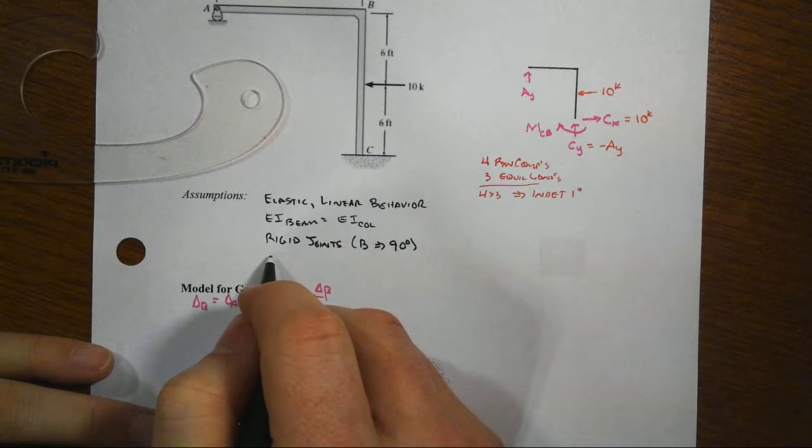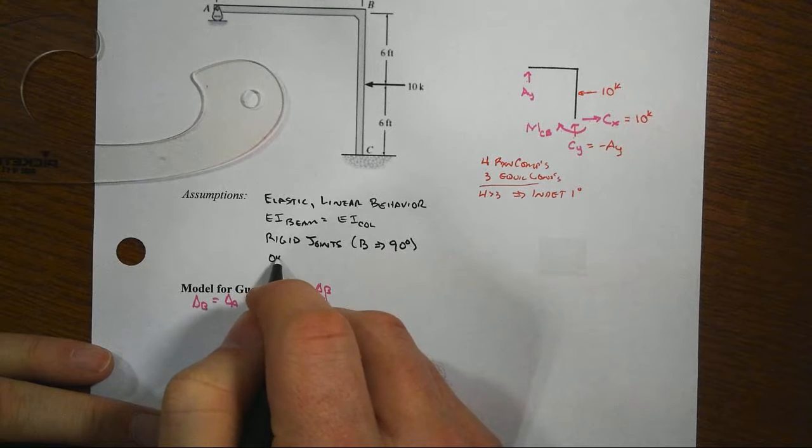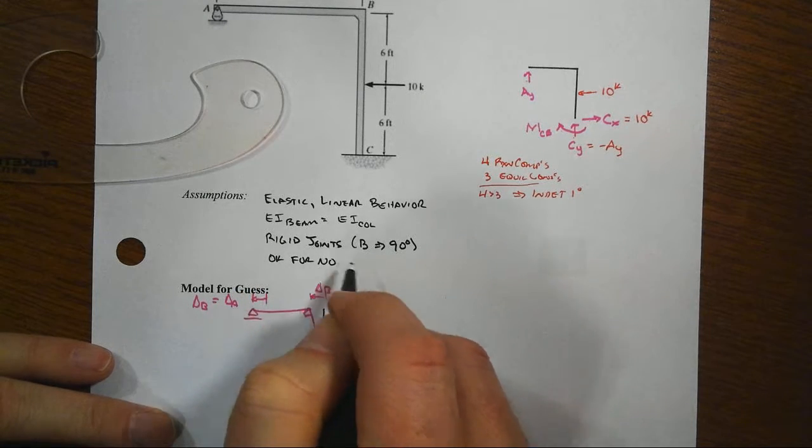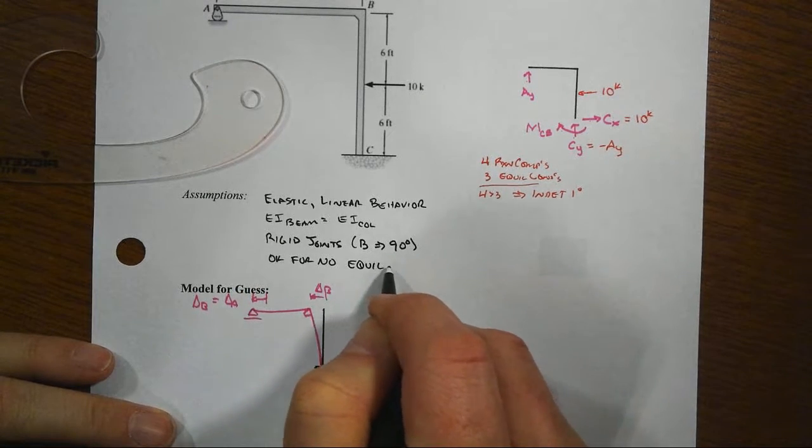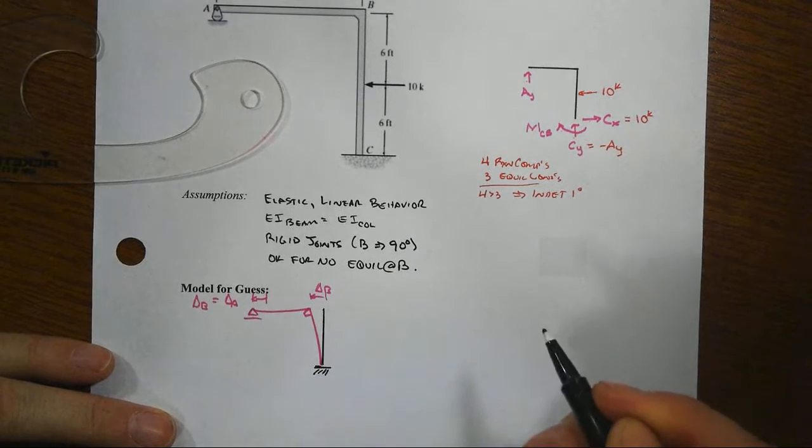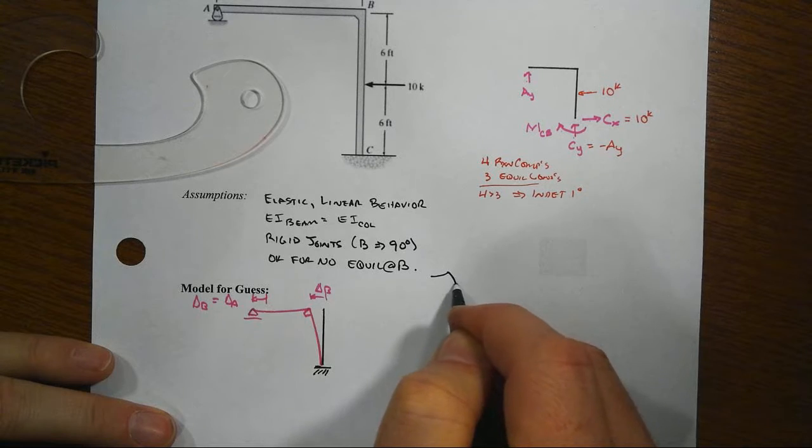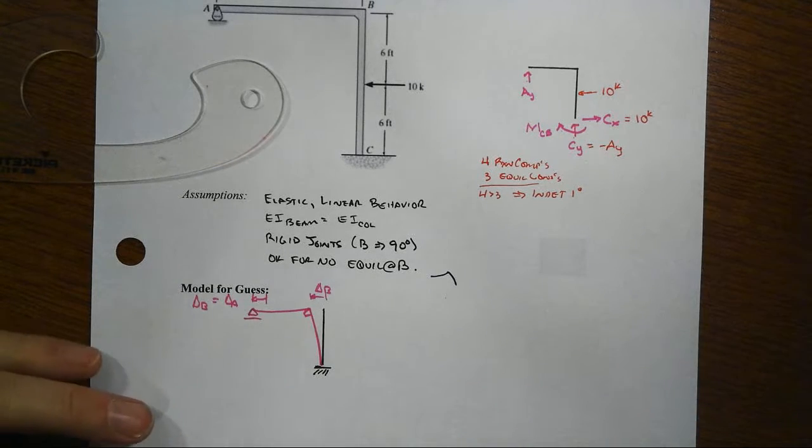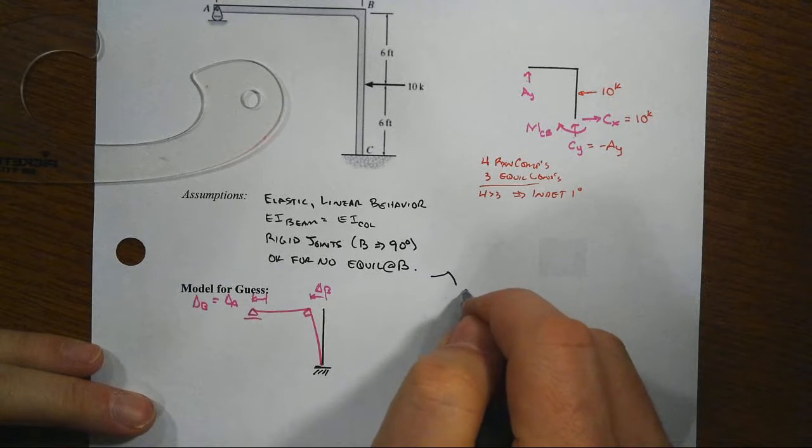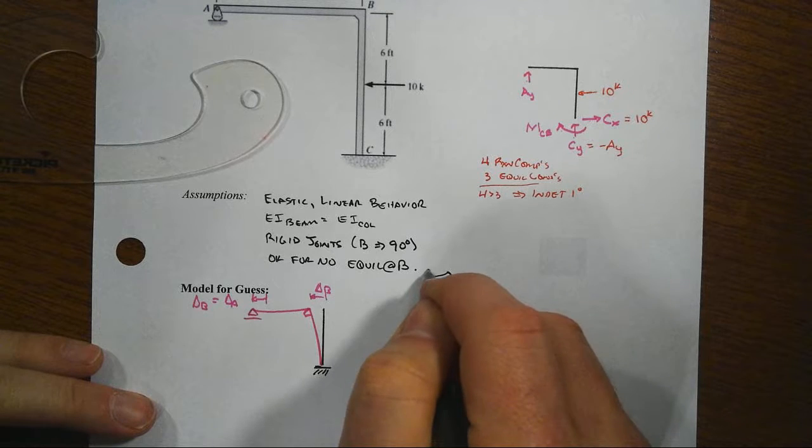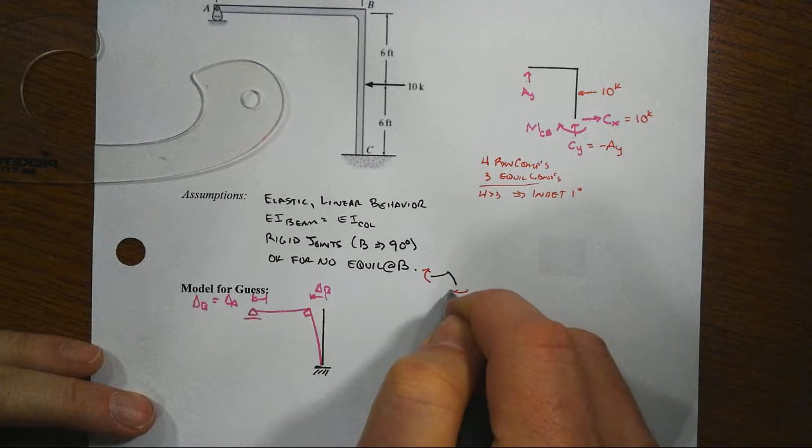Well, what we're going to also assume is that it's okay for no equilibrium at B. Now that really feels bad, but note here we've got a joint that's curved like this, and the way I've just drawn here these moments.